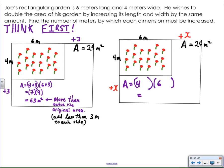So I replace all of the threes with unknowns. So here, instead of having six plus three, I'm going to have six plus x. And here, instead of having four plus three, I'm going to have four plus x, representing my length and my width.